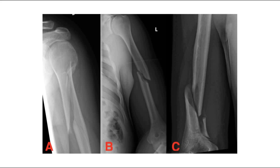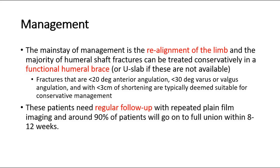The mainstay of management is realignment of the limb, and the majority of humeral shaft fractures can be treated conservatively in a functional humeral brace. Specifically, fractures with less than 20 degrees of anterior angulation, less than 30 degrees of varus or valgus angulation, and less than 3 centimeters of shortening are typically suitable for conservative management. These patients need regular follow-up with repeated plain film imaging, and around 90% will go on to full union within 8 to 12 weeks.